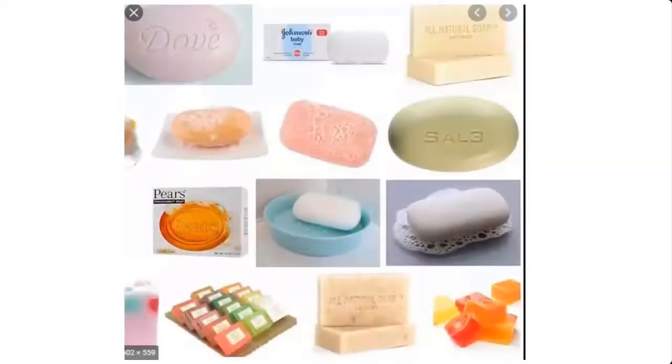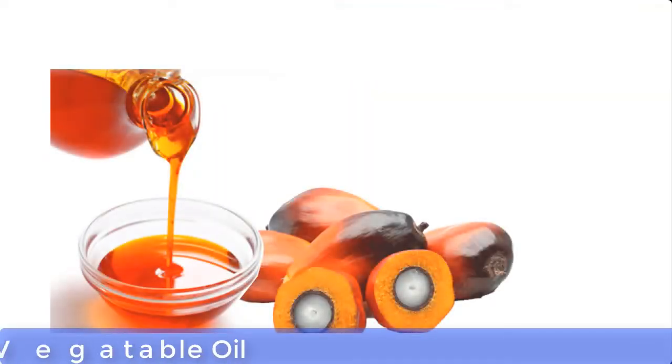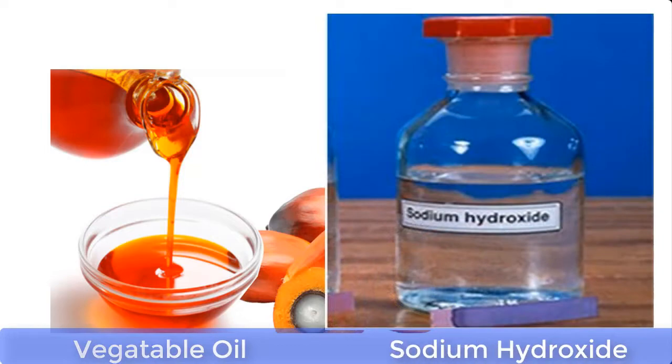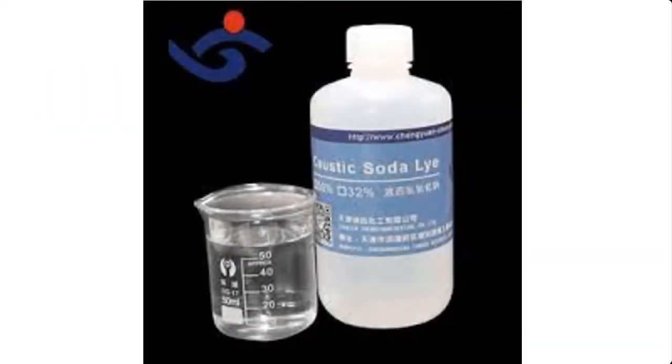Now bath soap, toilet soap, or medicated soap are made with two very important materials: these are vegetable oil and lye. Lye is a solution of caustic soda, that is sodium hydroxide, or caustic potash, that is potassium hydroxide.